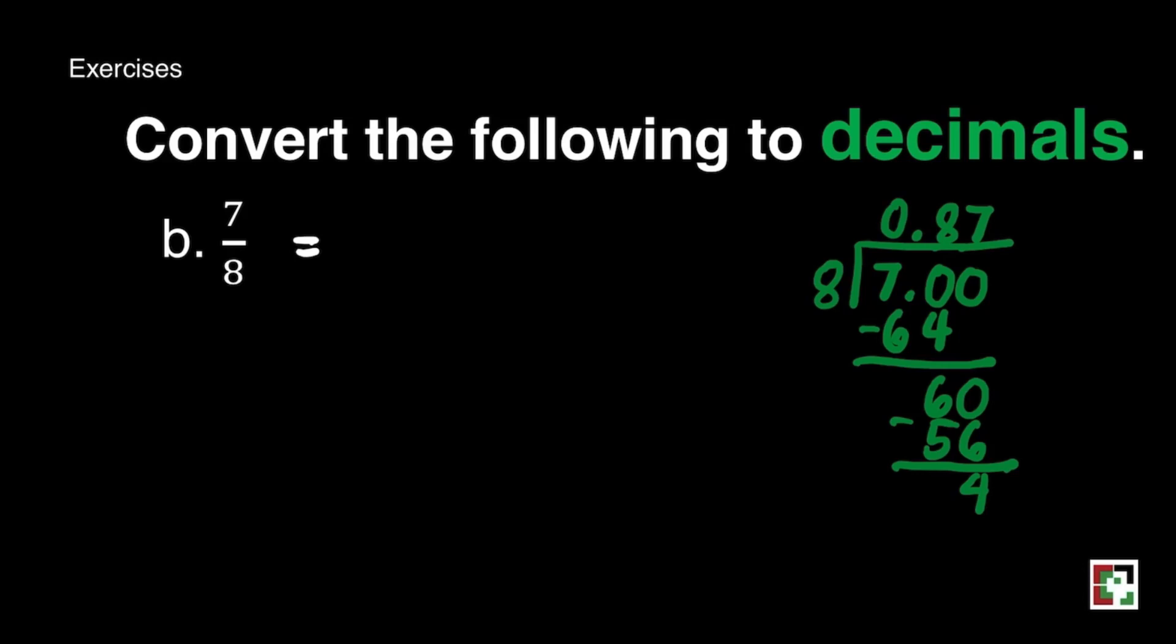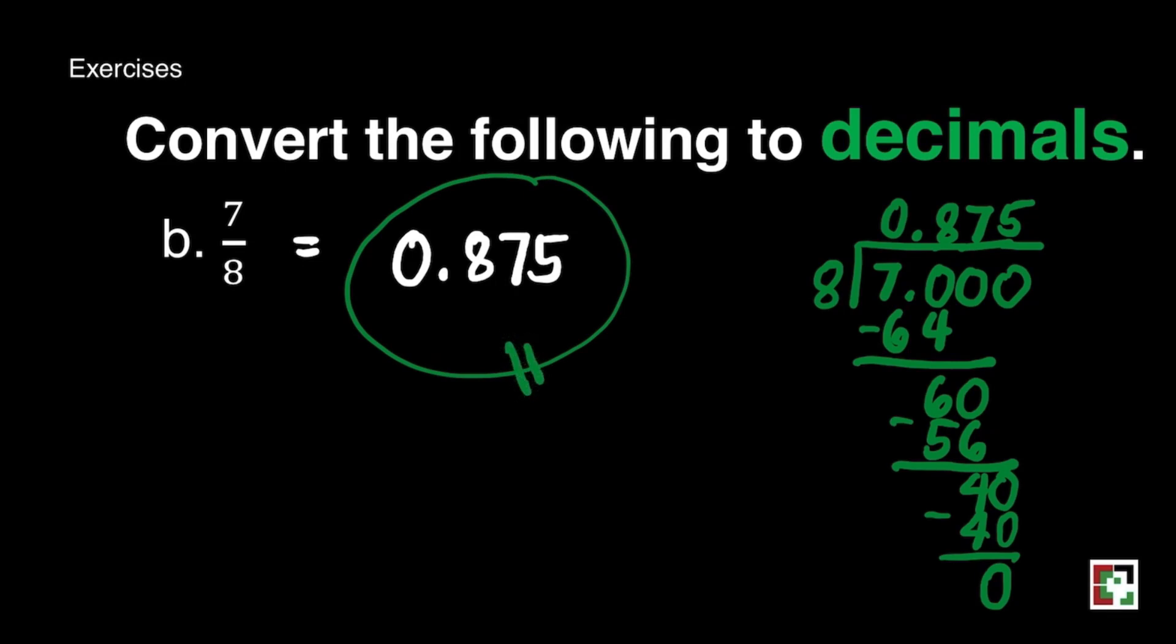We get 4. Then add 0. Bring down 0. How many eighths are there in 40? That's 5. 5 times 8 is equal to 40. Then subtract. We get 0. Next, our answer will be 875 thousandths.